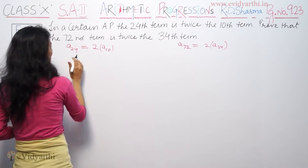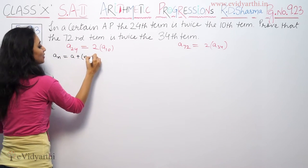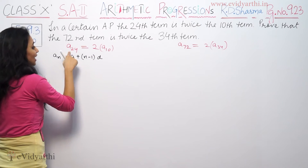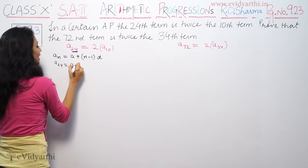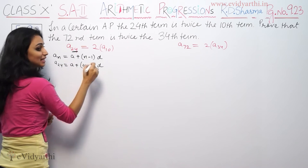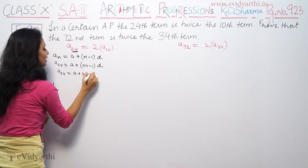So, A24. An is the formula A plus N minus 1D. A24 means N is 24. A24 is A plus 24 minus 1D. A24 is A plus 23D.